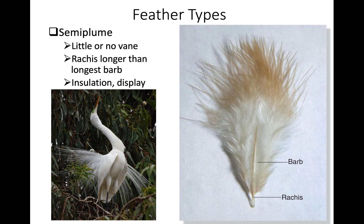Semi-plumes look like down but have a much more substantial rachis. They have plumulaceous regions coming off the rachis with barbs that don't find nice integration. Their primary function is insulation — usually underlying the contour feathers — but some have been modified to extend past the contour feathers and produce visual displays used in courtship, as seen in this egret.